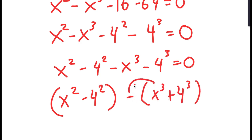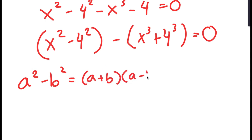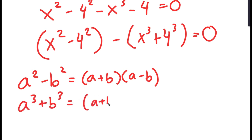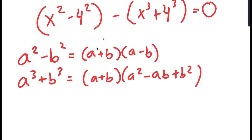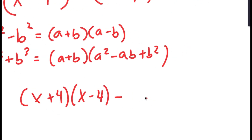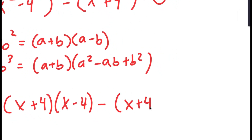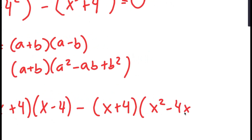There are two properties I'm going to use. If I have something in the form a squared minus b squared, this equals a plus b times a minus b. And if I have a cubed plus b cubed, this equals a plus b times a squared minus ab plus b squared. So x squared minus 4 squared turns into x plus 4 times x minus 4. And x cubed plus 4 cubed turns into x plus 4 times x squared minus 4x plus 16.